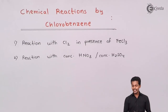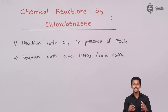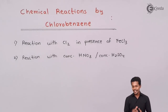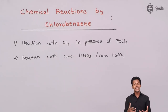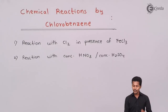The next reaction is with concentrated HNO3 — basically nitric acid — in presence of concentrated H2SO4, which is basically the nitrating mixture. So we will discuss what happens when chlorobenzene is reacted with these reagents.